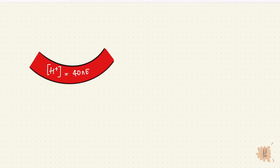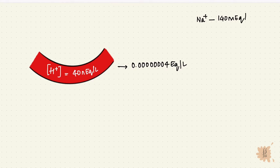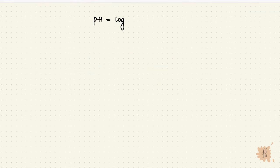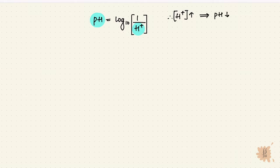The concentration of hydrogen ions in blood is around 40 nanoequivalents per liter. That's a super small number compared to a substance like sodium, whose plasma concentration is 140 milliequivalents per liter. It's so small that handling a number like this can be difficult, which is why we express it as a pH. The pH is the log of one over the hydrogen ion concentration. The important thing is the inverse relationship: if hydrogen ion concentration increases, pH reduces, and vice versa. It's also a logarithmic relationship, not linear.